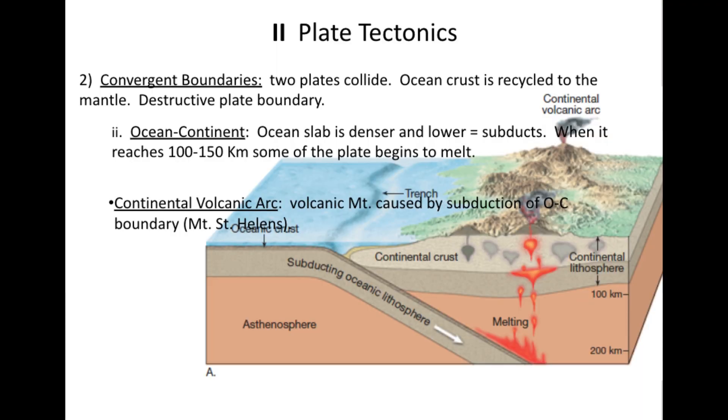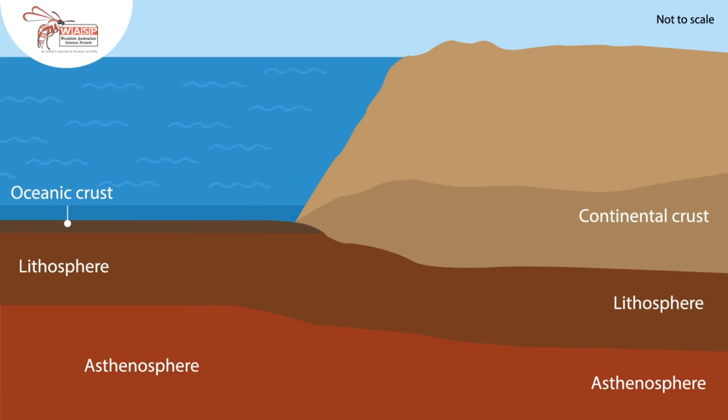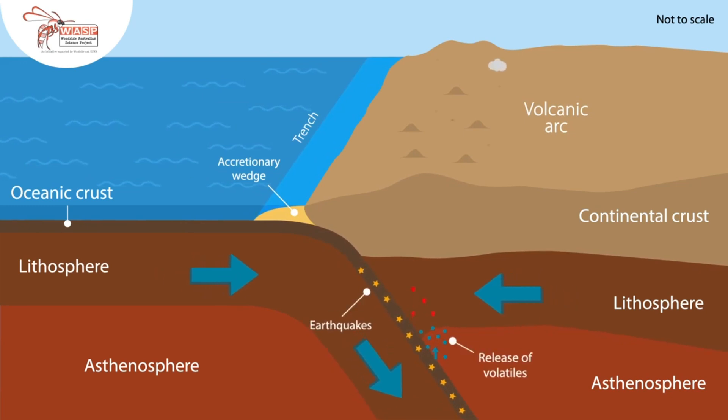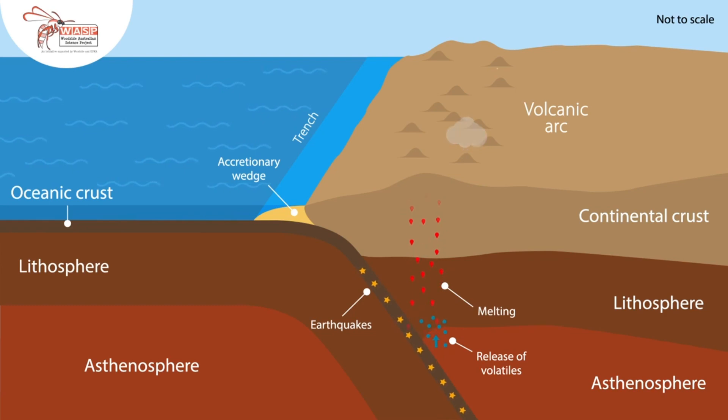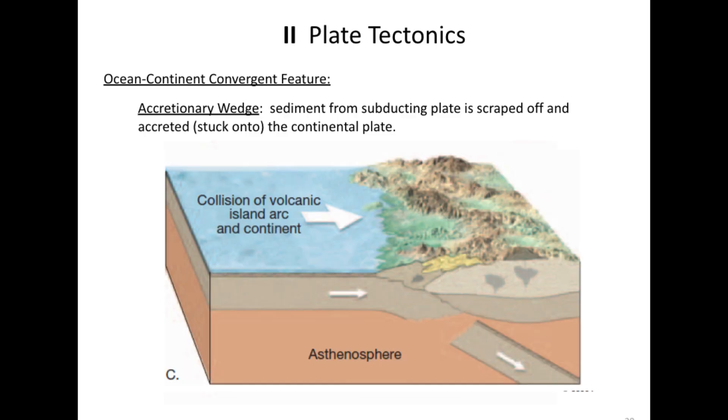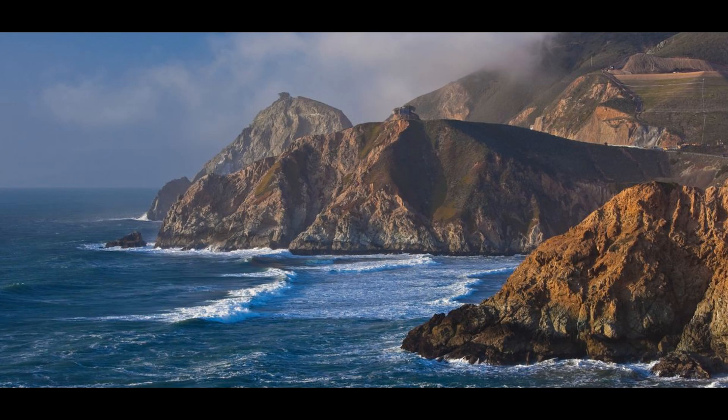An ocean-to-continent convergent boundary is similar — ocean crust collides with a continent, but ocean crust is still more dense because it's made of basalt while continents are made of granite. So the ocean still subducts, still causes melting, and produces a continental volcanic arc. A real-world example is the Cascade Mountains in the US — Mount St. Helens, Mount Baker, Mount Hood. Another feature is an accretionary wedge: friction scrapes ocean sediments off the subducting floor and cements them onto the continent. The Coastal Range in Southern California is an entire mountain range built from piled ocean sediments.